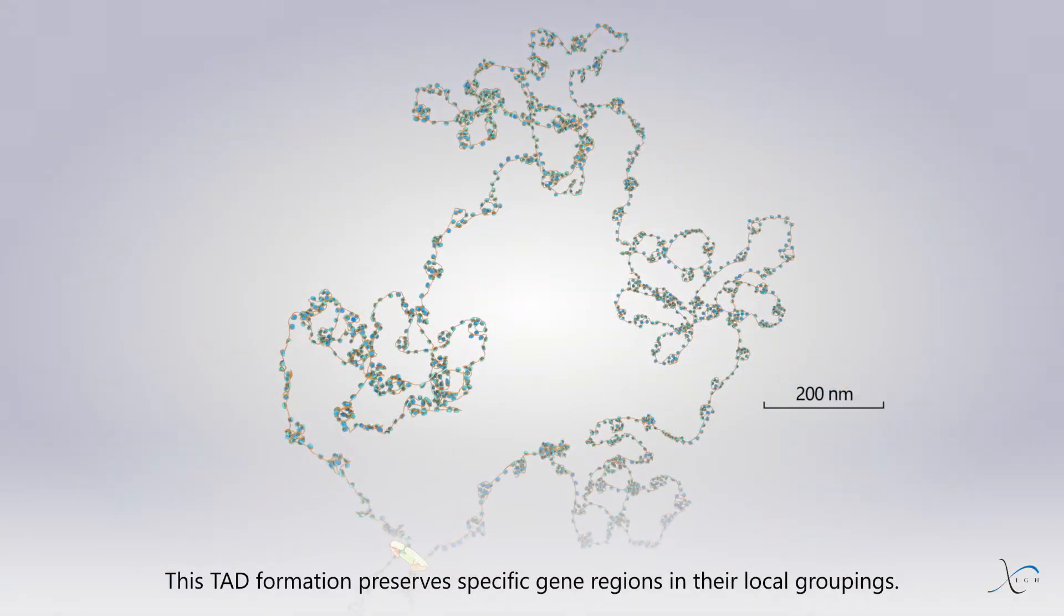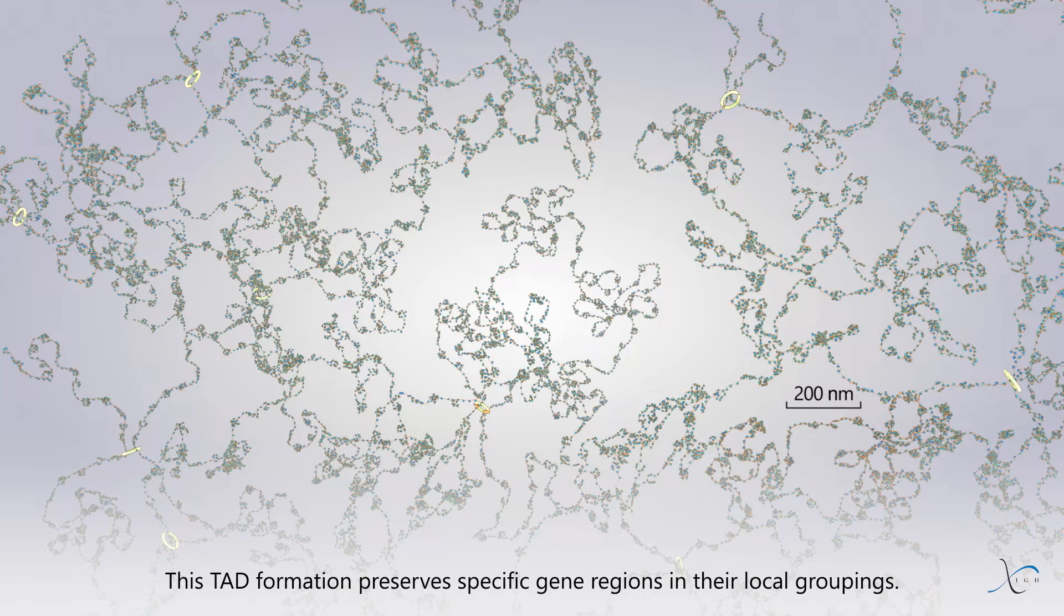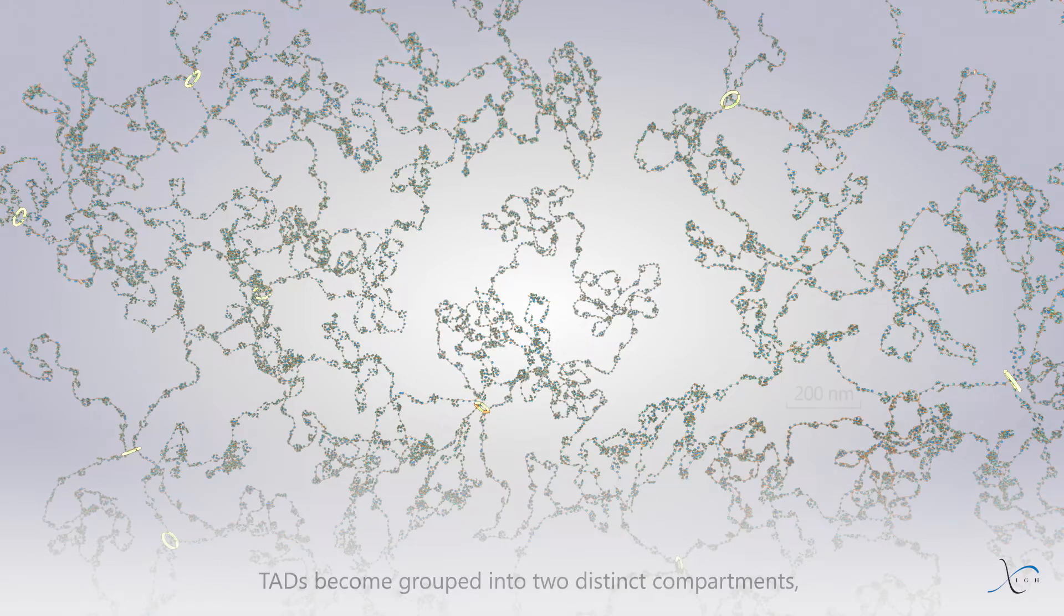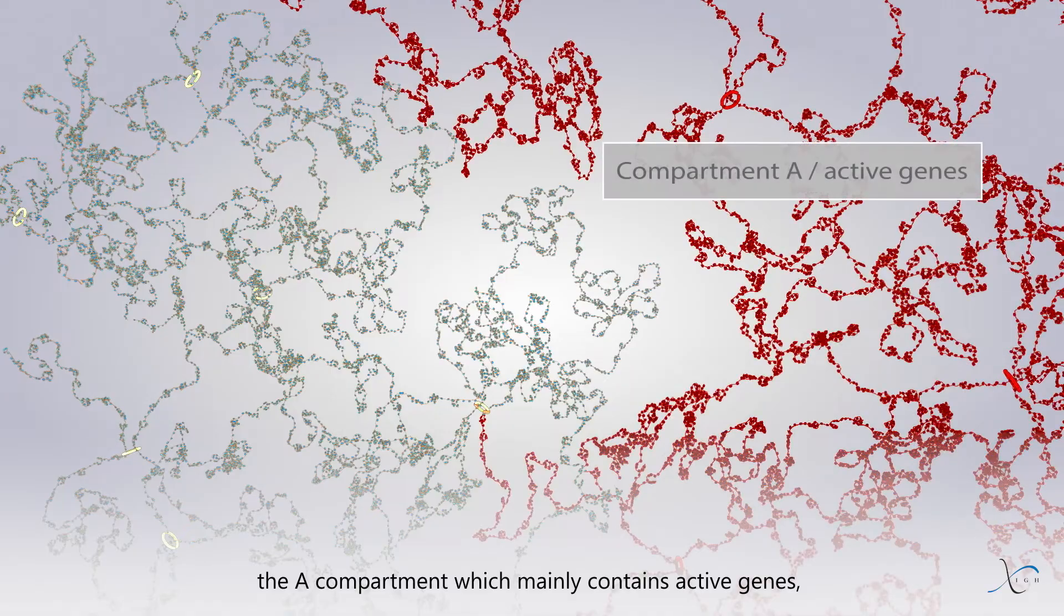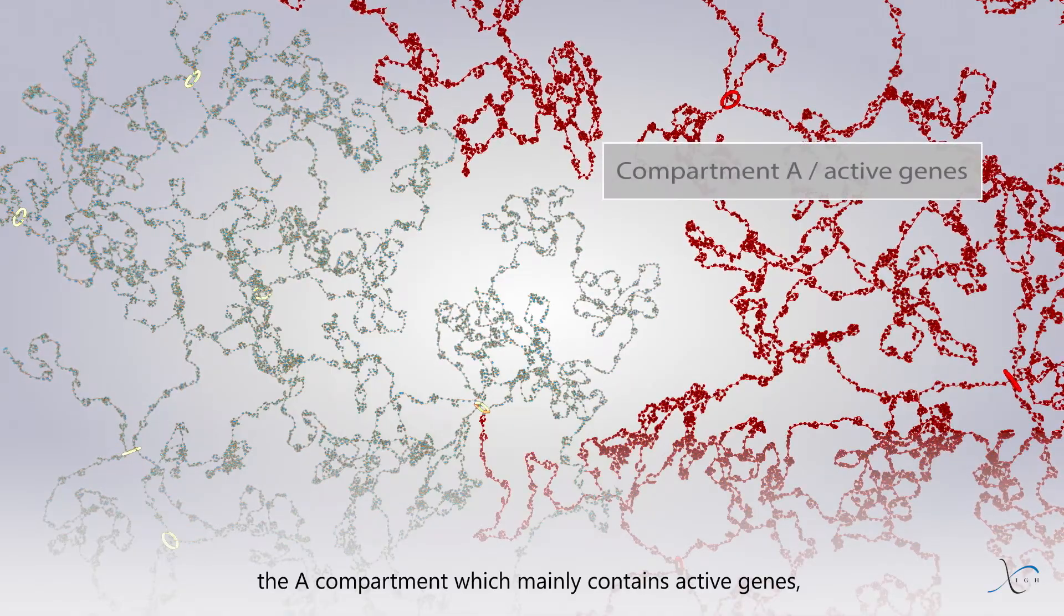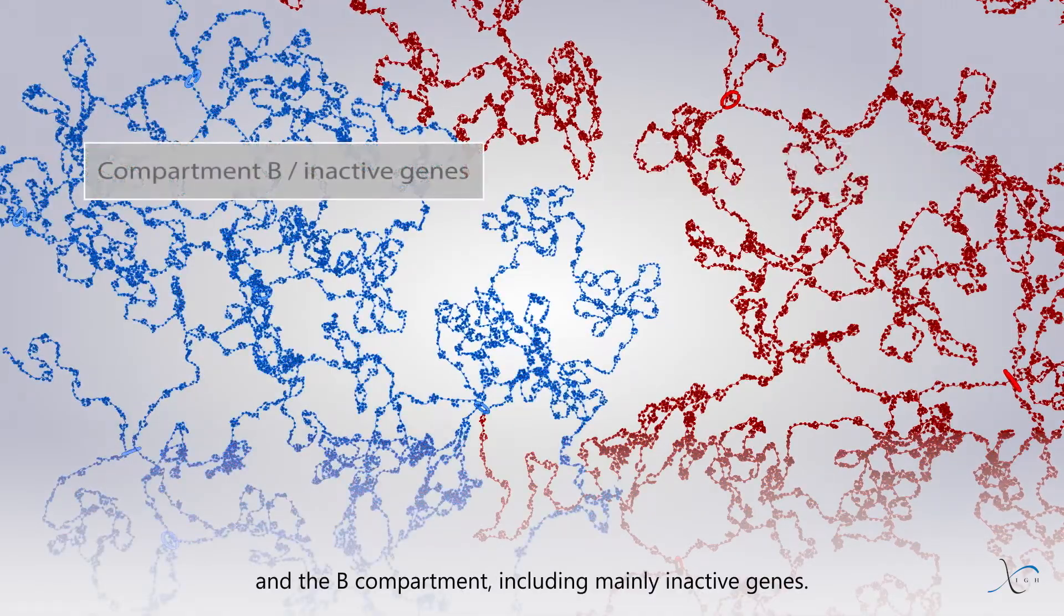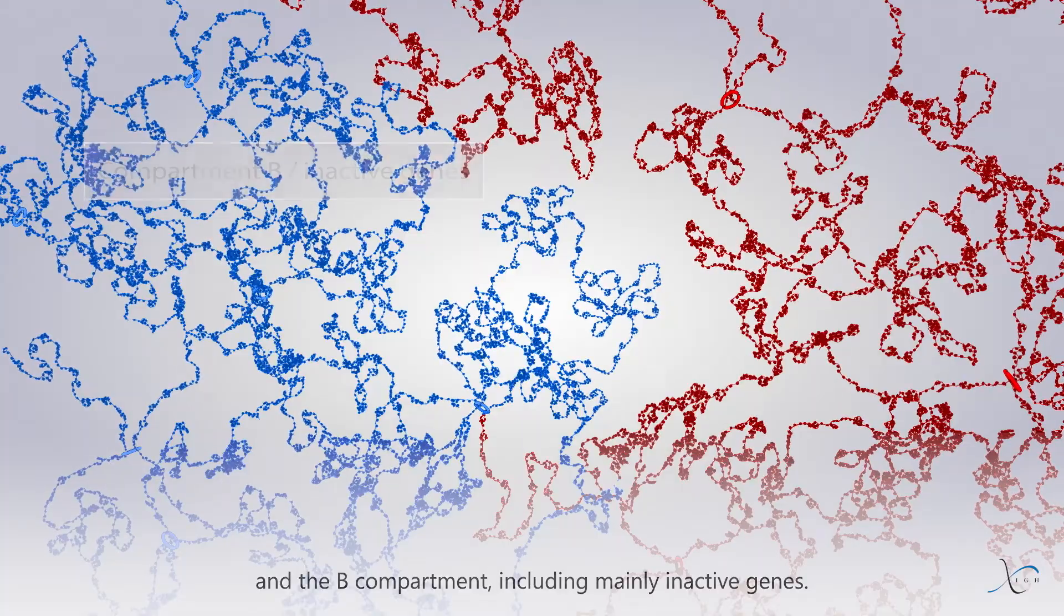This TAD formation preserves specific gene regions in their local groupings. TADs become grouped into two distinct compartments: the A compartment, which mainly contains active genes, and the B compartment, including mainly inactive genes.